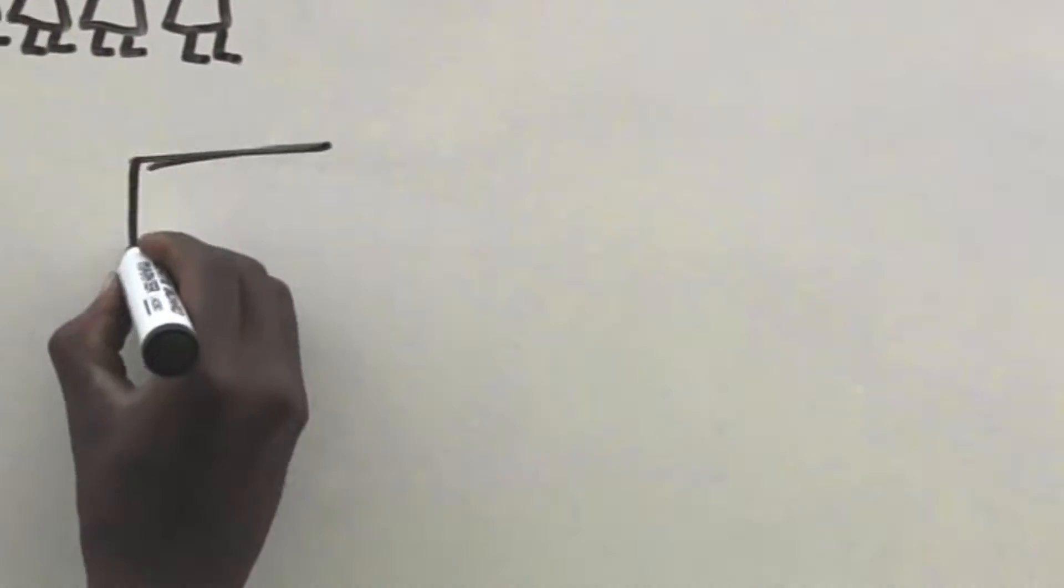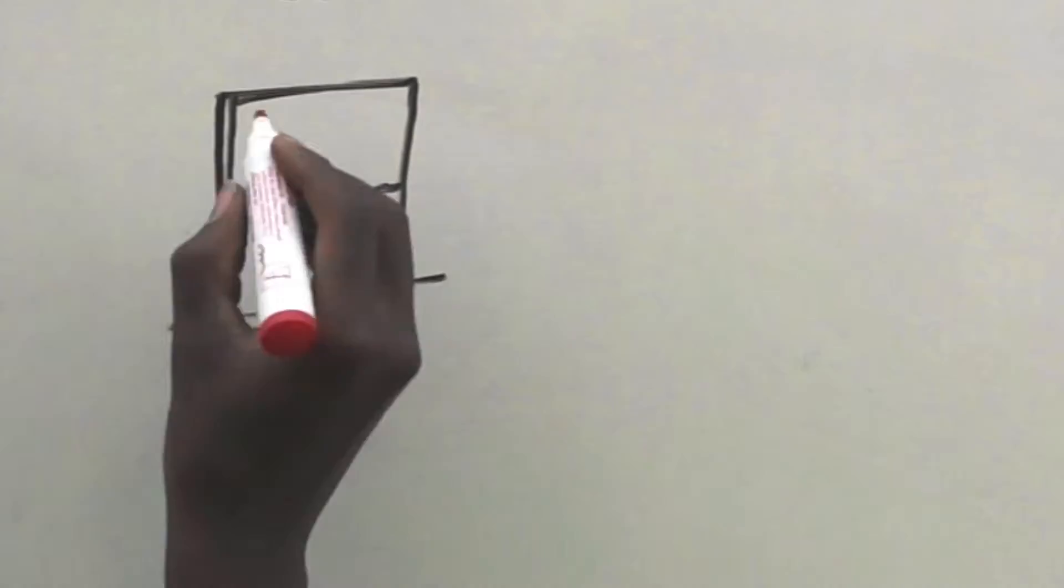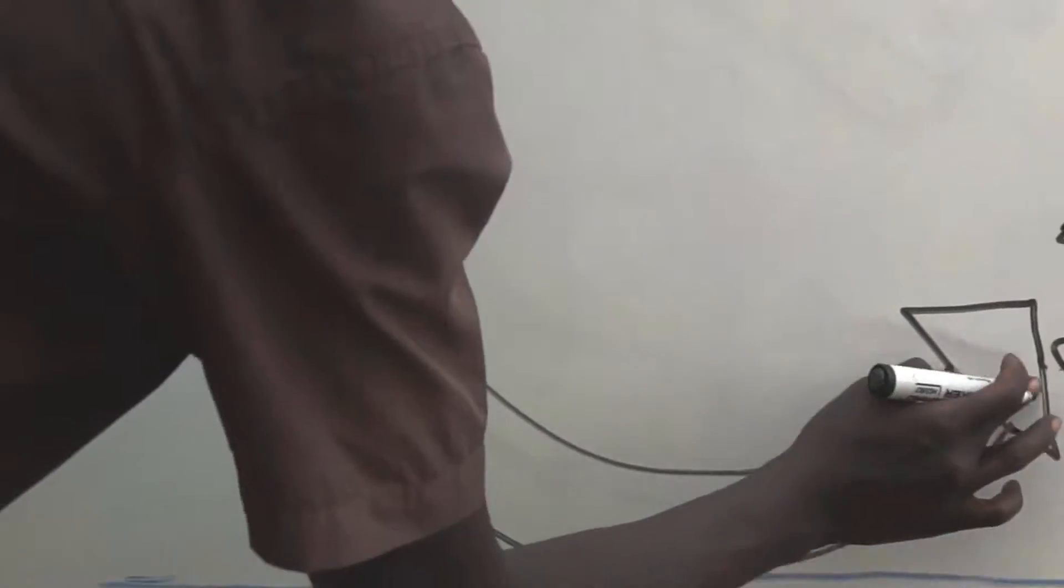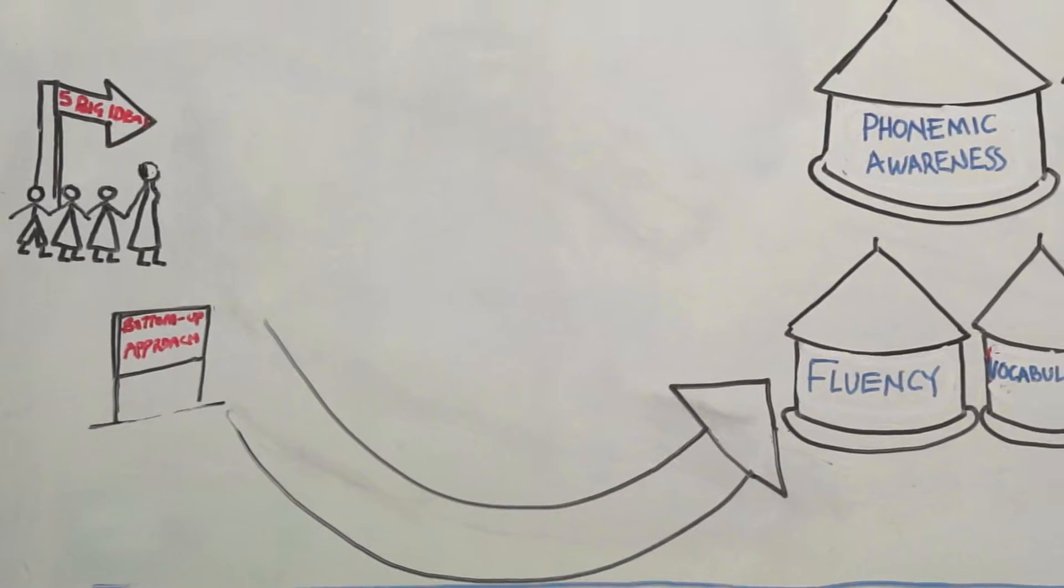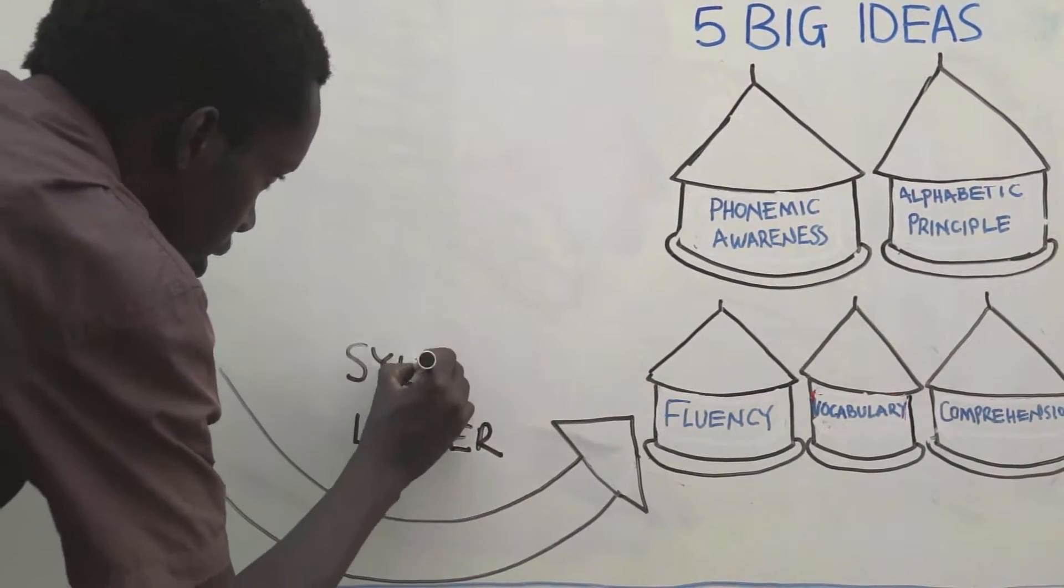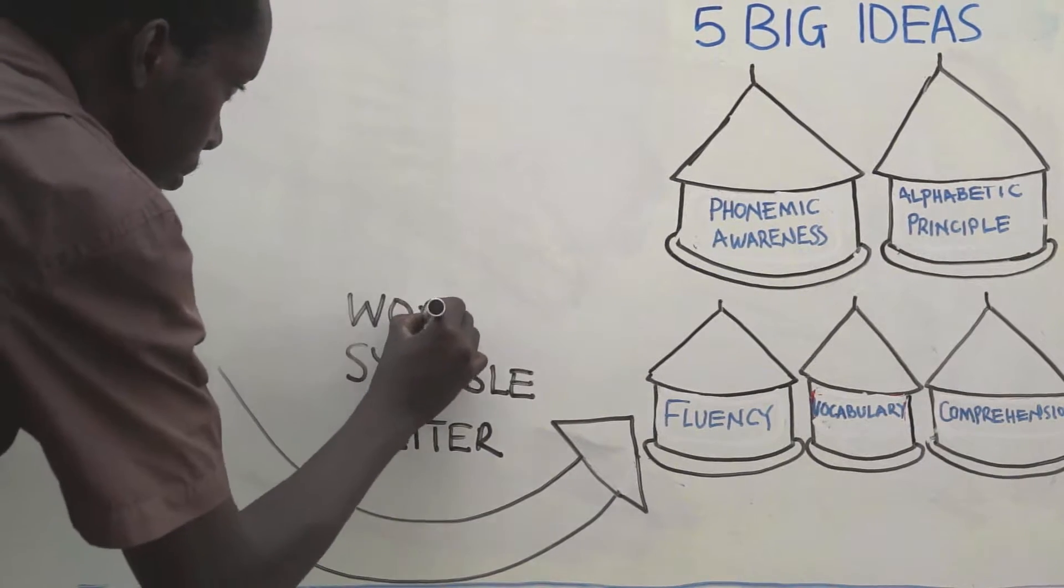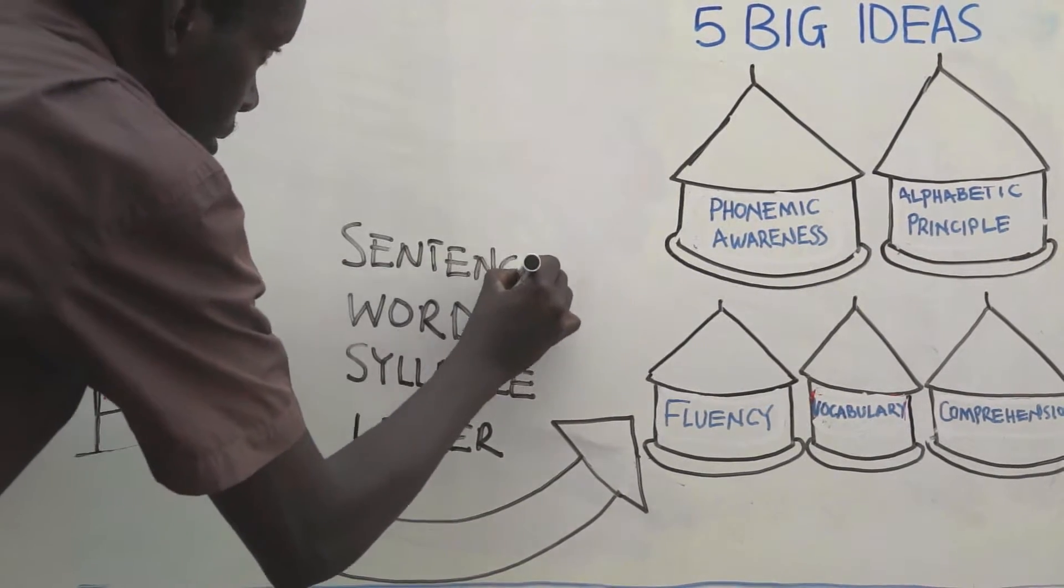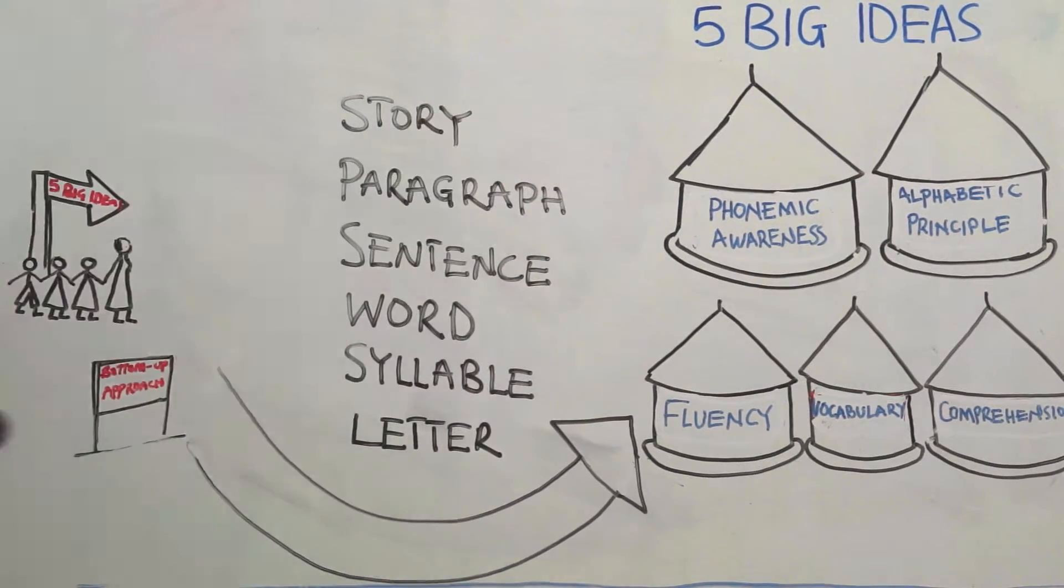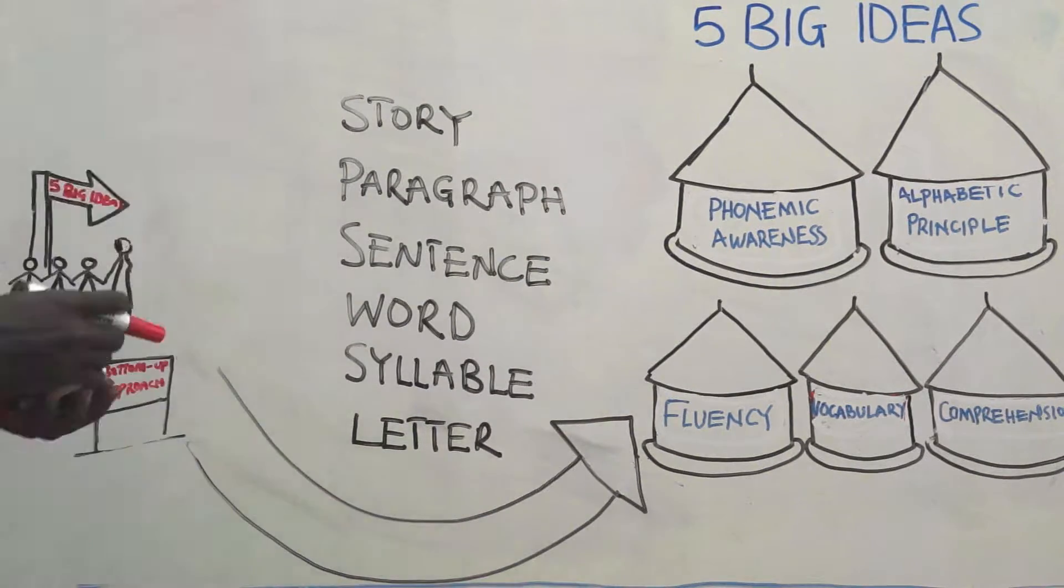Historically, there have been two main paths or approaches that teachers have taken to help pupils become literate. The first we will call the bottom-up approach. We call it bottom-up because it starts with letters and gradually works its way up to syllables, words, sentences, paragraphs, and finally, stories.